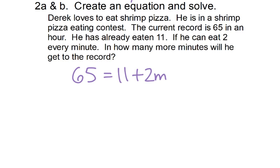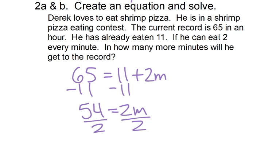You could have done a different variable and it still would work. So we subtract 11, giving us 54 equals 2m, divide by 2, and that would give us 27. So as long as he eats for 27 minutes, the next one he eats after that will put him over the record.